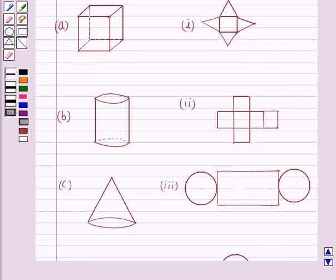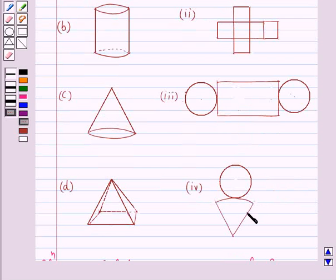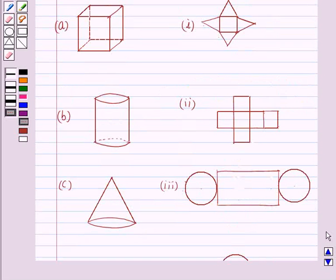Now after finding the number of faces of the given solids we observe that cube matches with net two, cylinder matches with net three. Cone matches with net four and pyramid matches with net one.